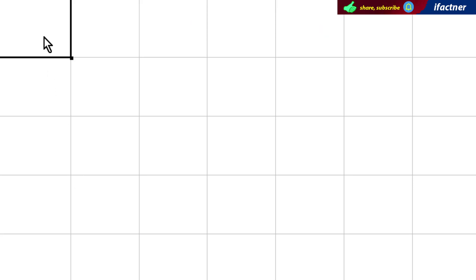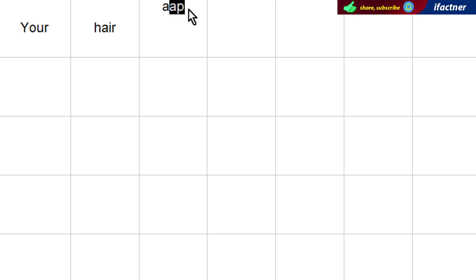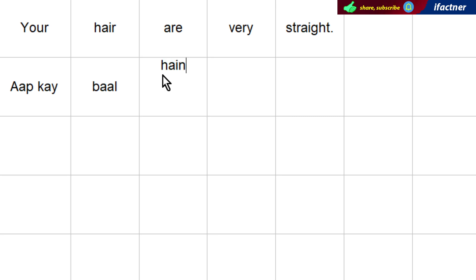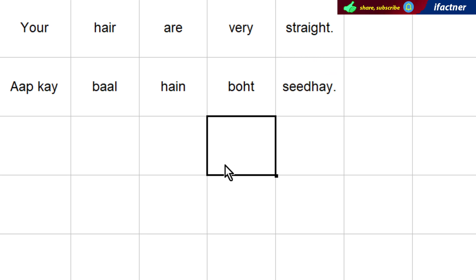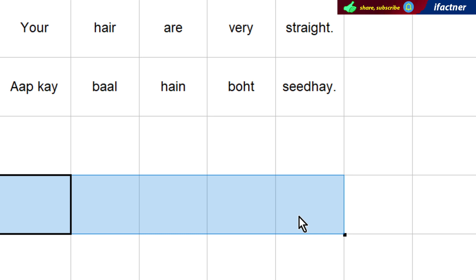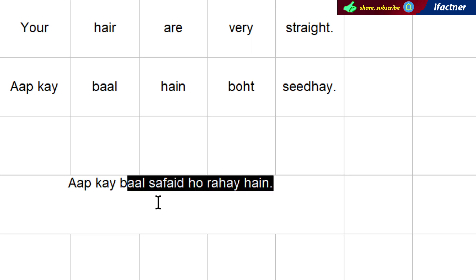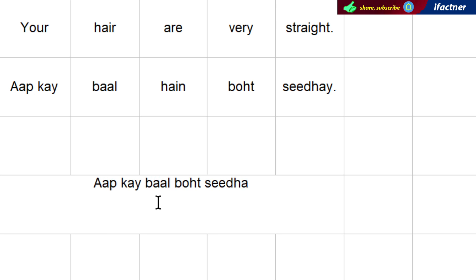Or if you have long hair, the barber or hairstylist may say: 'Your hair are very straight.' 'Your hair' is 'aap kay baal', 'are' is 'hain', 'very' is 'bohat', 'straight' is 'seedhay'. So: 'Aapke baal bohat seedhay hain.'